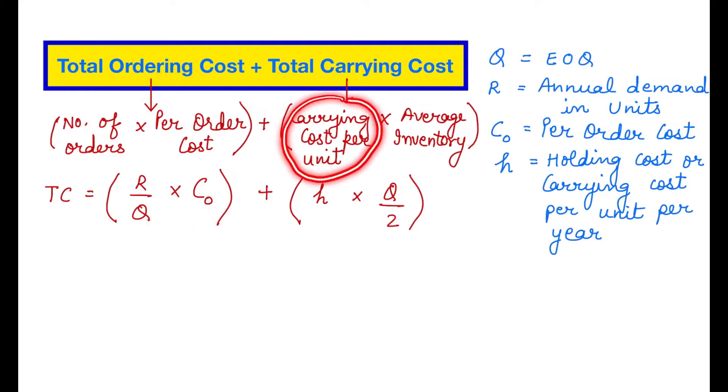Then carrying cost per unit, which is H, will be multiplied by the average inventory we keep in our godown. Basically Q by 2. Why is it used as average inventory? Basically we are interested in finding out that throughout the year, how much inventory we keep in our godown, and the cost of that we are interested in finding out.